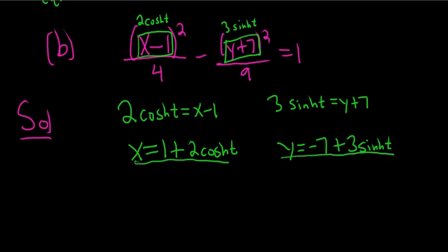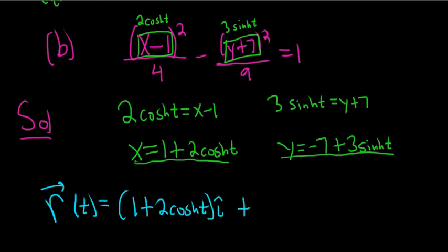So now we can write down our vector-valued function. So r with our super arrow of t, it's always x of t times i hat. So we know our x. So that's 1 plus 2 cosh t, i hat. And then y times j hat.